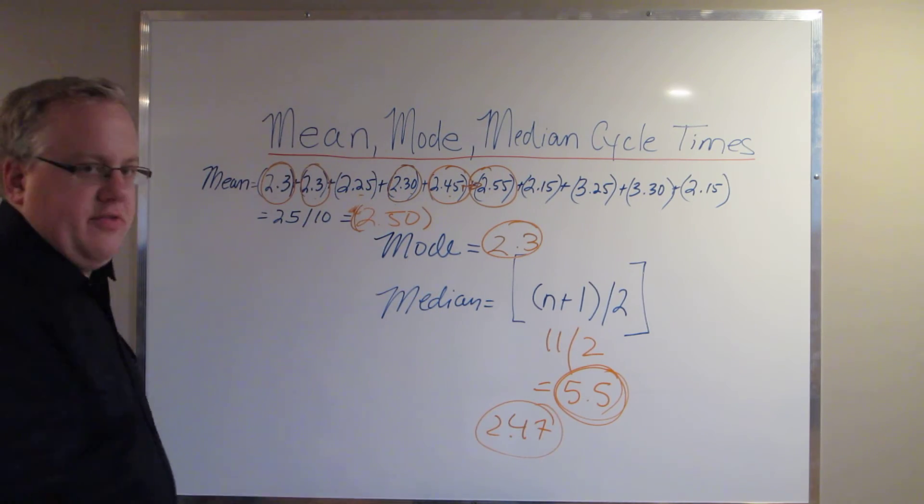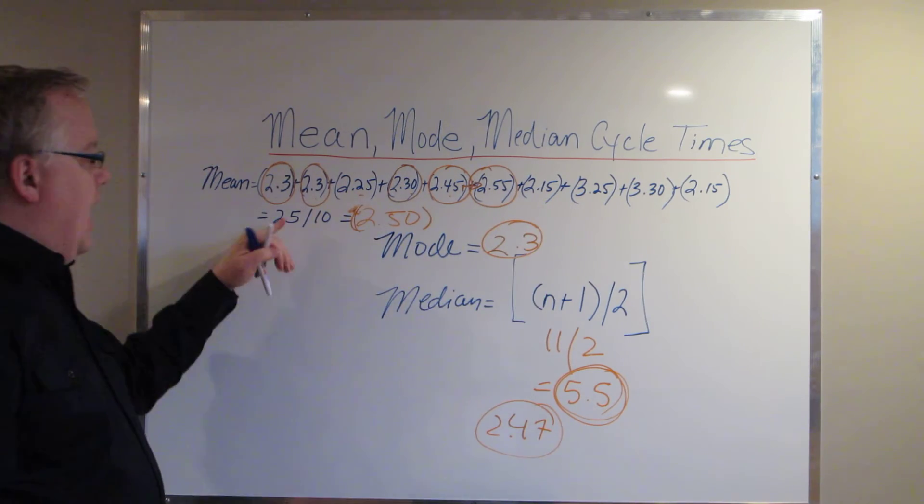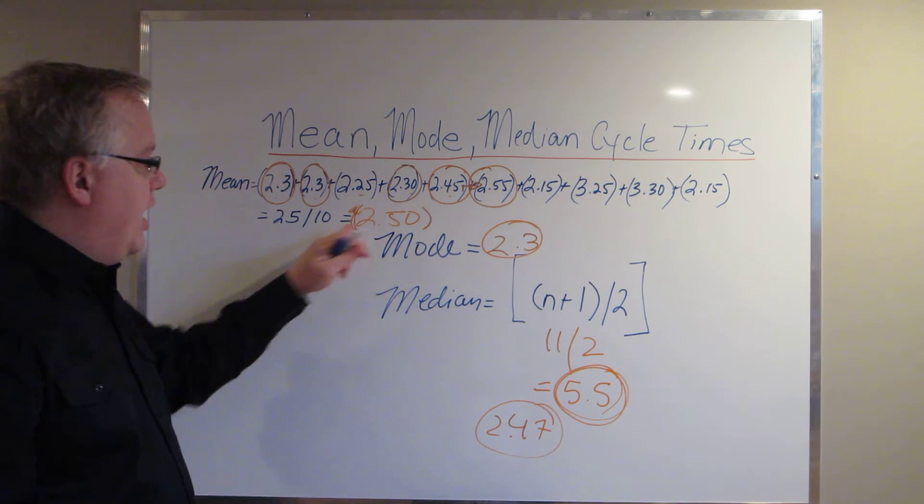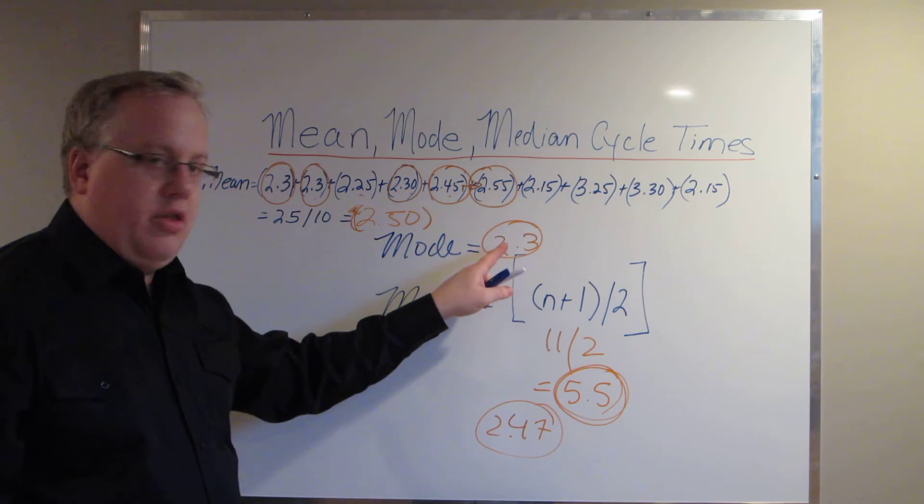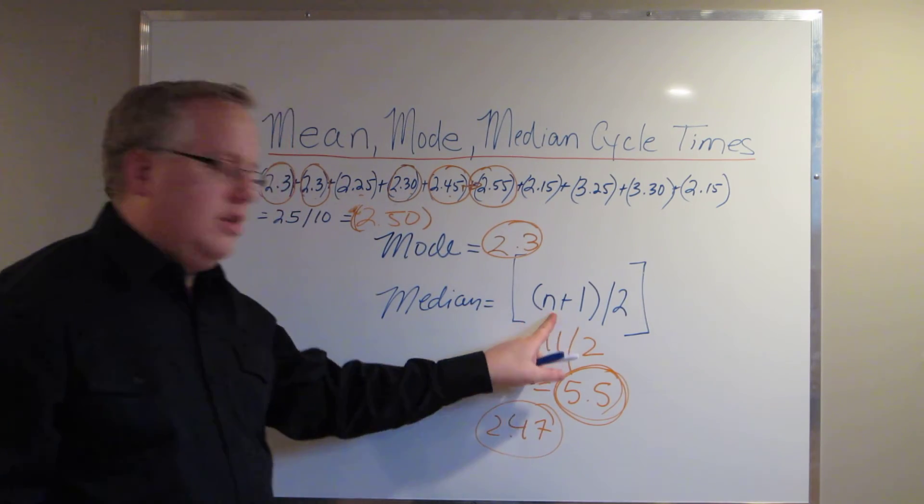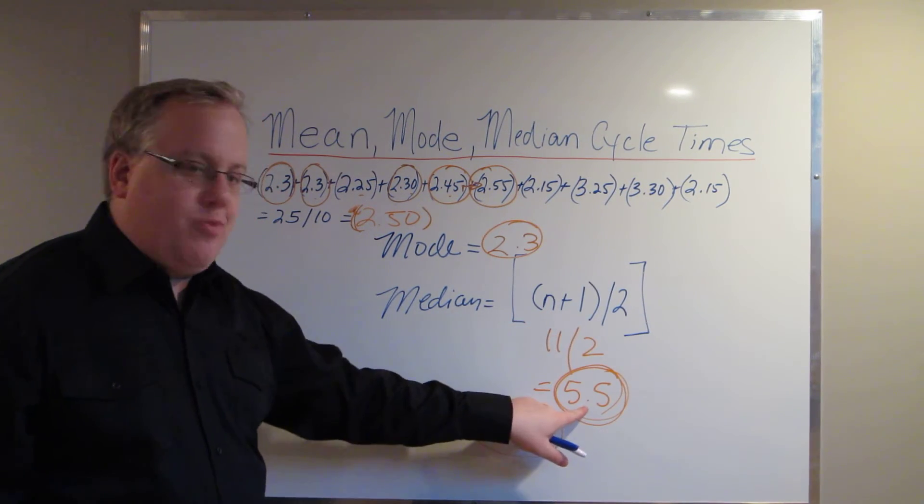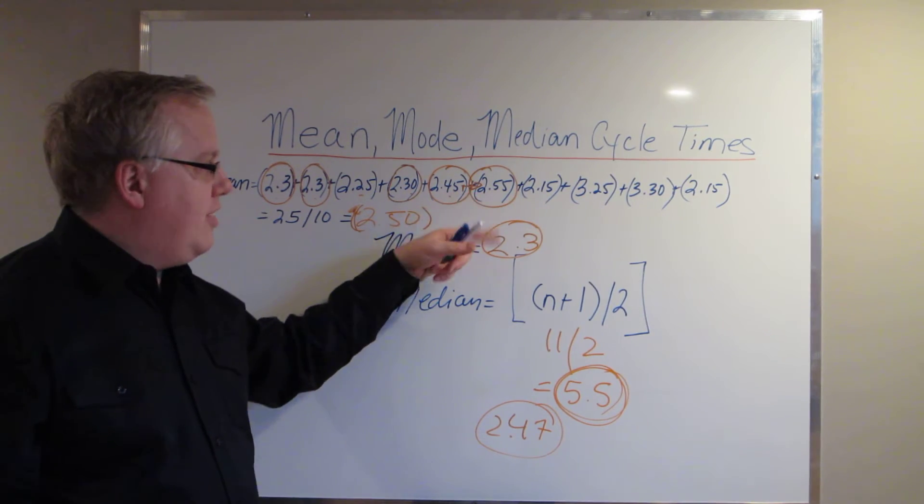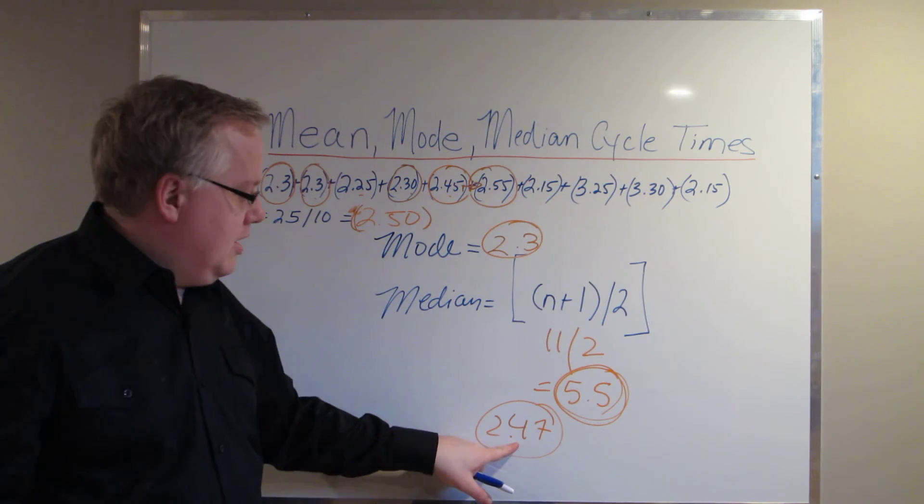So you've got three ways of calculating average. Mean, take all your sample portions, add them up. You get 25 divided by the number of operations, 10, gives you 2.5. Mode is the one that occurs the most frequently. 2.3 occurs the most frequently in this sequence. And the median is you take the number of operations plus 1 divided by 2, gives you 5.5. Locate the operation between 5 and 6, right around here. So you're looking at about 2.47.